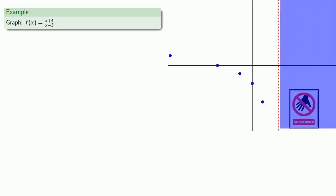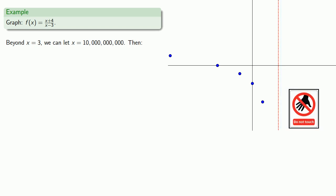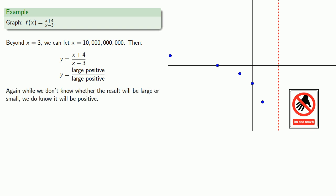Beyond x equals 3, we can let x equal 10 billion, and so y will be a large positive number divided by a large positive number, and again, while we don't know whether the result will be large or small, we do know it will be positive. So we'll graph a point somewhere off to the right that's above the x-axis.